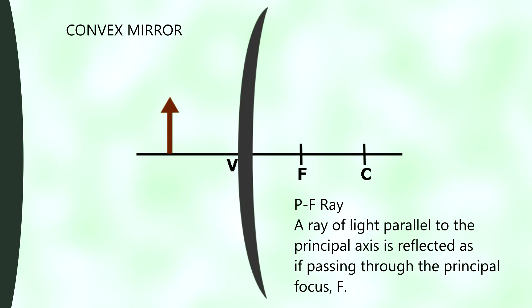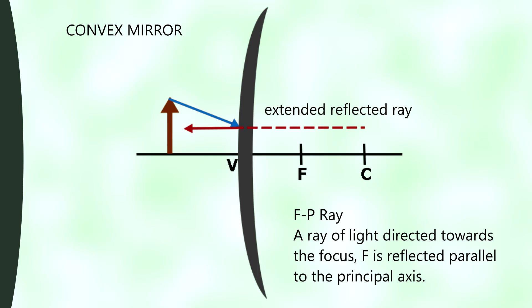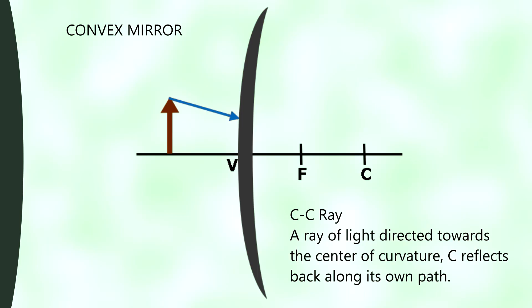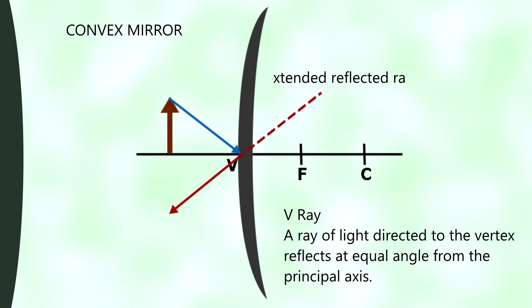For the convex mirror, the four principal rays are as follows. PF ray: a ray of light parallel to the principal axis is reflected as if passing through the principal focus. FP ray: a ray of light directed towards the focus is reflected parallel to the principal axis. CC ray: a ray of light directed towards the center of curvature reflects back along its own path. V ray: a ray of light directed to the vertex reflects at an equal angle from the principal axis.